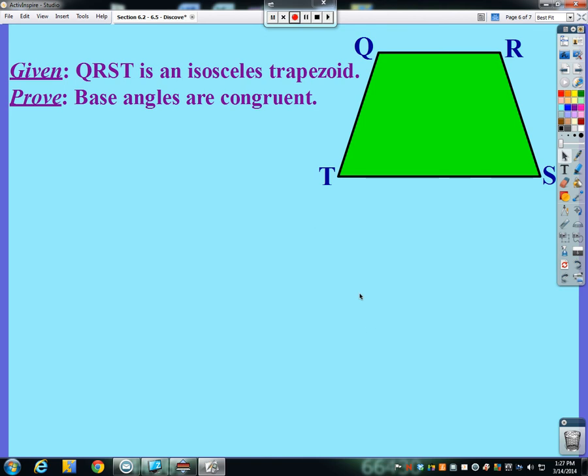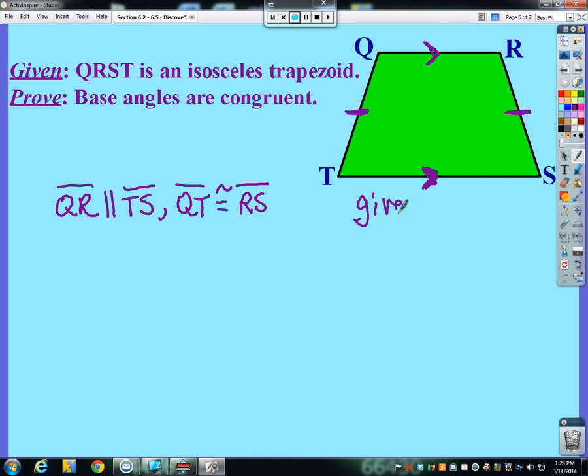Now, the proof we're going to look at for the trapezoid. We're going to start out knowing that we have an isosceles trapezoid. So I can go ahead and mark on this, and I'm going to assume that these are the bases here. So I'm going to assume that QR is parallel to TS, and since it's isosceles, QT is congruent to RS. I'm going to go ahead and mark that as my given, essentially.